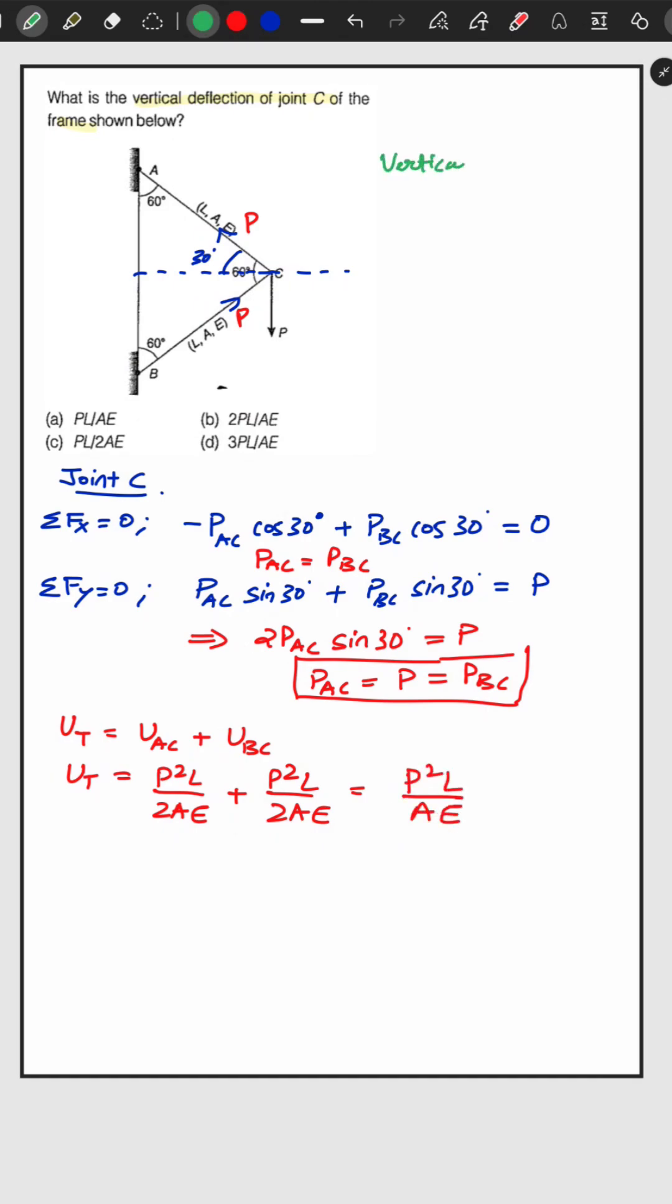Now vertical deflection. We can use Castigliano's second theorem that is delta C will be equal to del u by del p. This del u will be total. Now it will be del by del p will be equal to P squared L by AE and delta C will be 2PL by 2AE which equals PL by AE and that will be our answer.